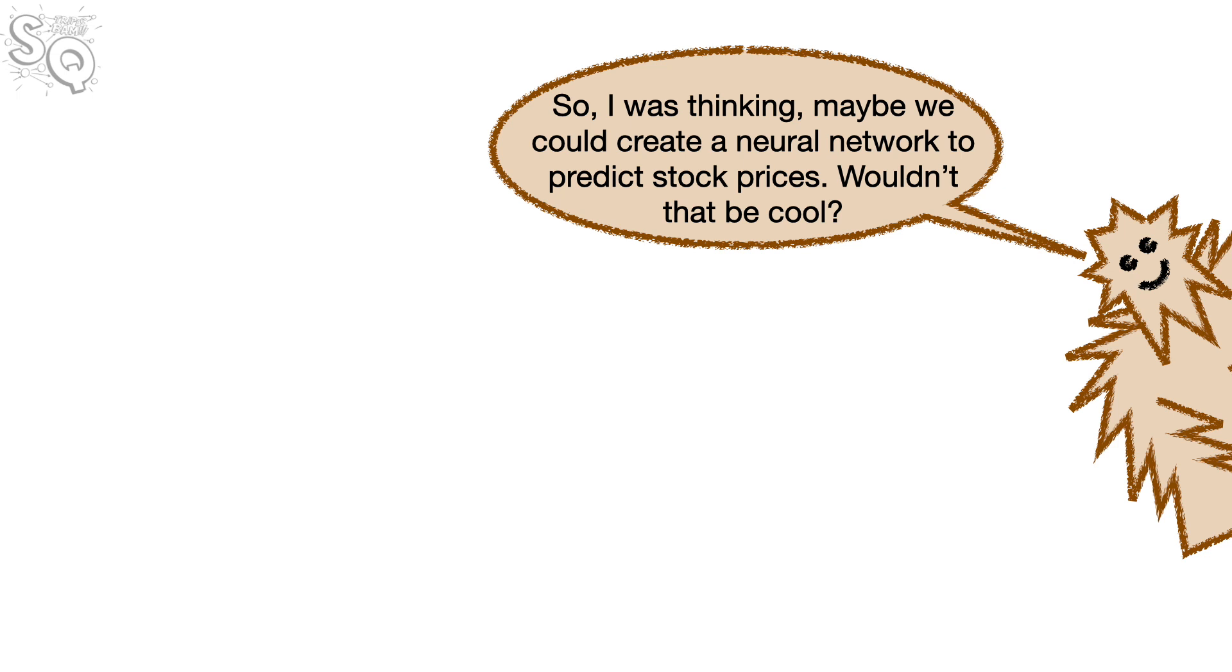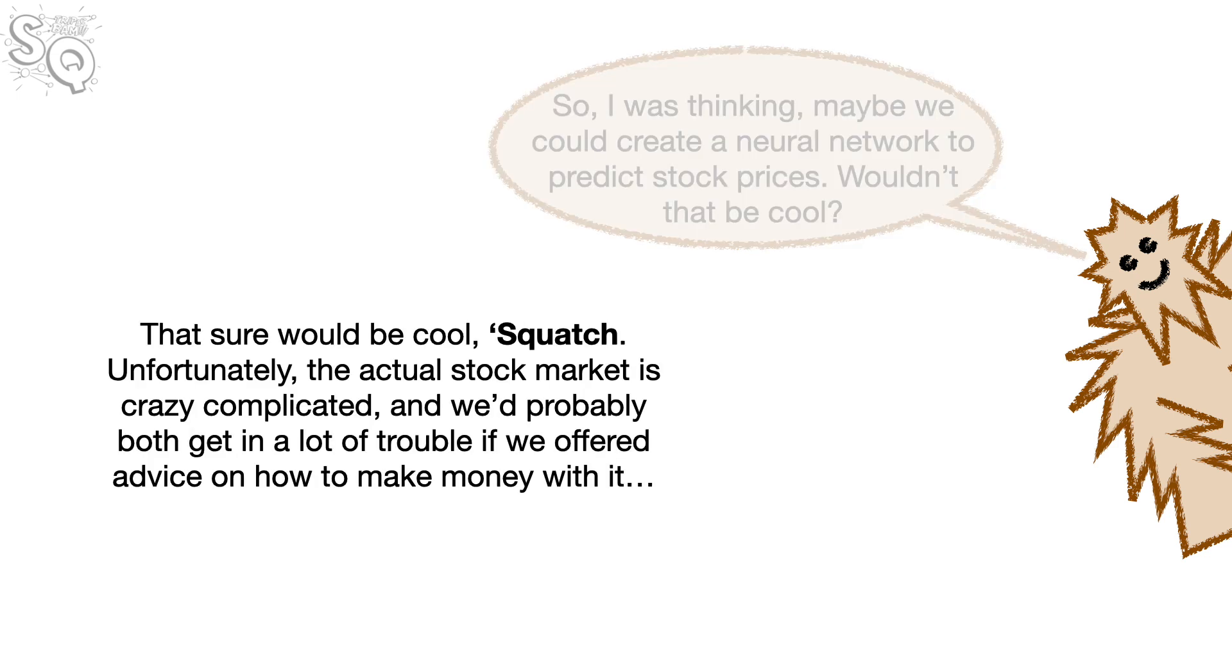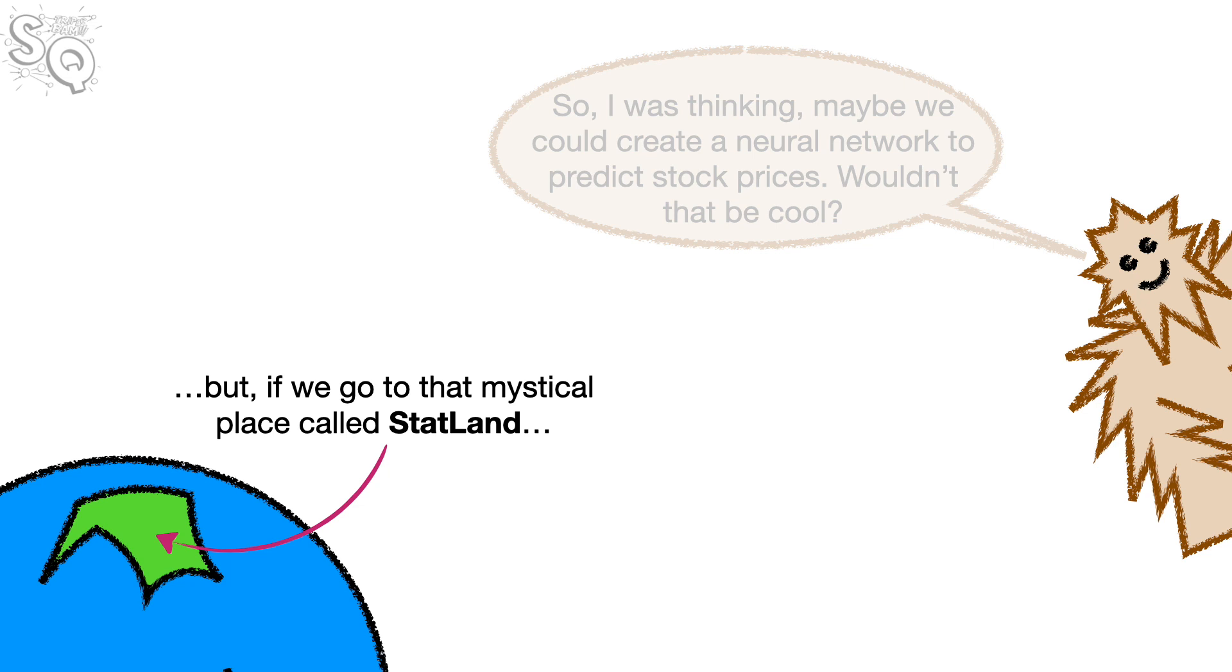Wouldn't that be cool? That sure would be cool, Squatch. Unfortunately, the actual stock market is crazy complicated, and we'd probably both get in a lot of trouble if we offered advice on how to make money with it. But, if we go to that mystical place called StatLand, things are much simpler and there are far fewer lawyers. So, let's build a neural network that predicts stock prices in StatLand.